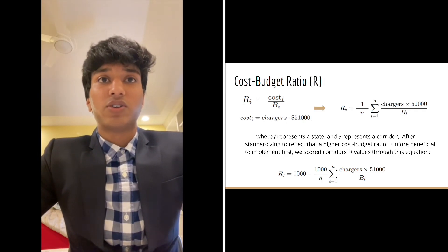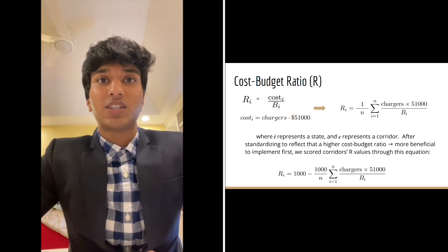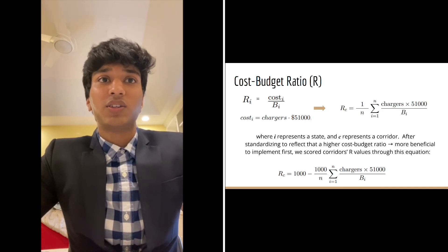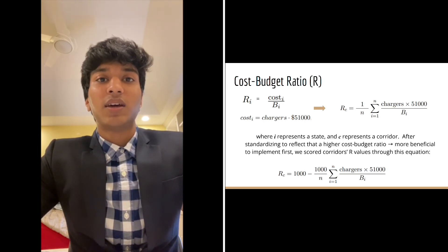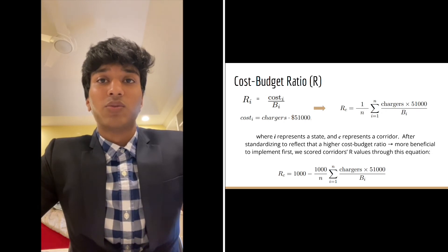As for the cost budget ratio, the implementation process of electric trucking would only work successfully and efficiently if the community has the means to afford it. Thus, we define the ratio to be the cost of building the charges in the state surrounding the corridor over the state's budget towards environmental protection. The cost can be calculated through multiplying the number of chargers located in the state as determined in the results from part two by the cost per charger. Thus, the corridor's cost budget ratio would be the average of the ratios of each surrounding state.